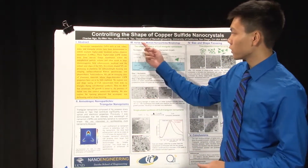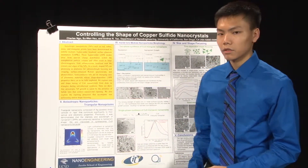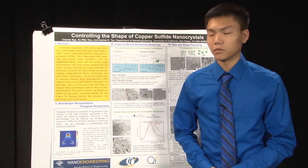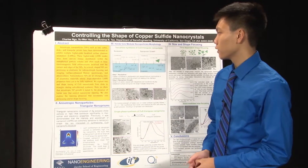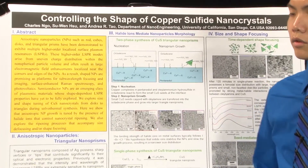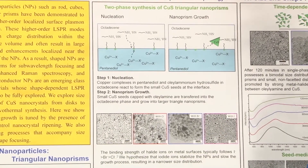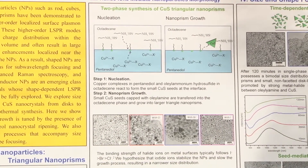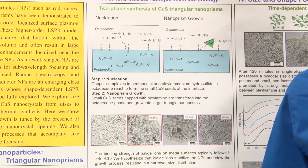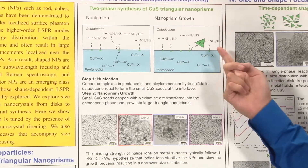How these anisotropic particles are formed is through the introduction of halide ions. This summer I worked with two different methods of fabricating these nanoprisms. The first is a two-phase synthesis, where the first step involves a nucleation step of growing small copper sulfide seeds, and the second step involves nanoprism growth, where these seeds combine to form larger nanoparticles such as nanoprisms.